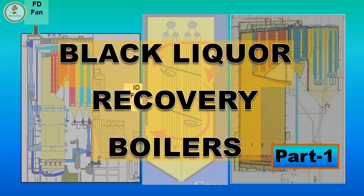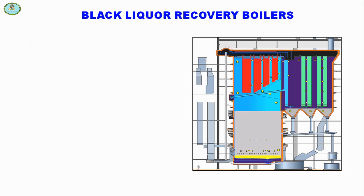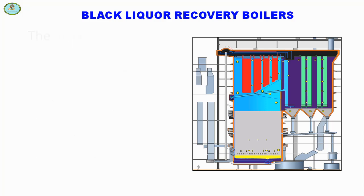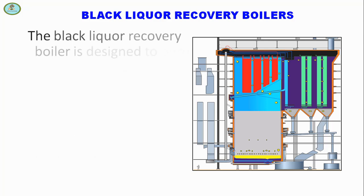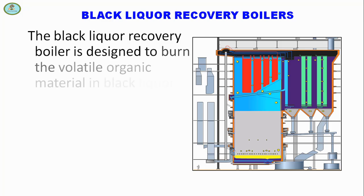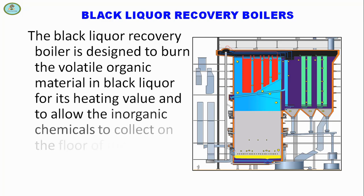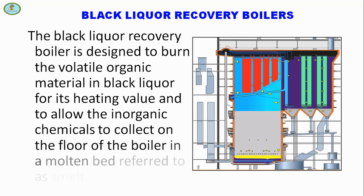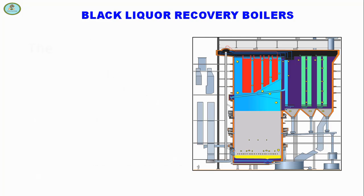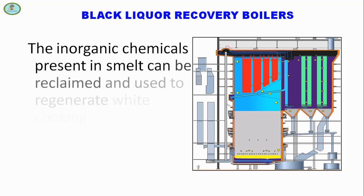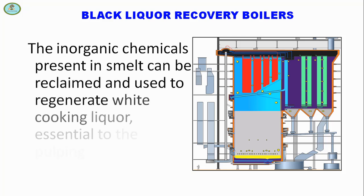Welcome back to bio tutorials. In this video we will discuss black liquor recovery boilers. Black liquor is a mixture of organic matter and inorganic chemicals that result from the pulping process. The recovery boiler is designed to burn the volatile organic material in black liquor for its heating value and to allow the inorganic chemicals to collect on the floor of the boiler in a molten bed referred to as smelt. The inorganic chemicals present in smelt can be reclaimed and used to regenerate white cooking liquor essential to the pulping process.